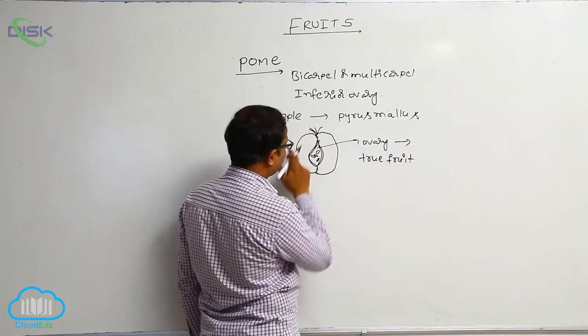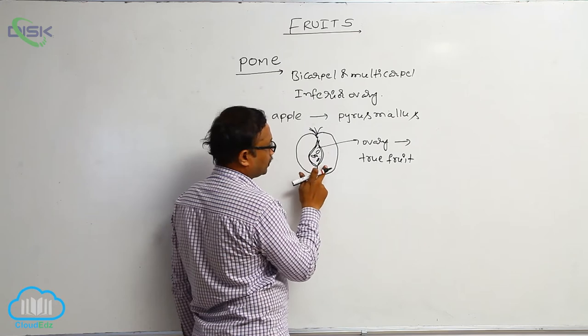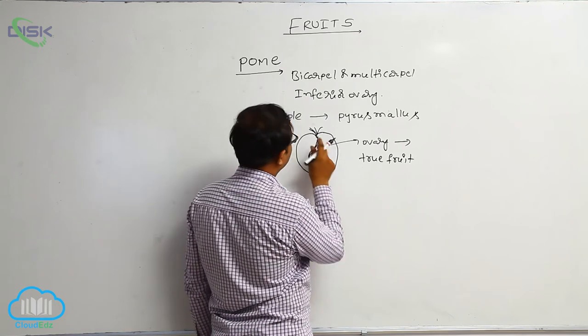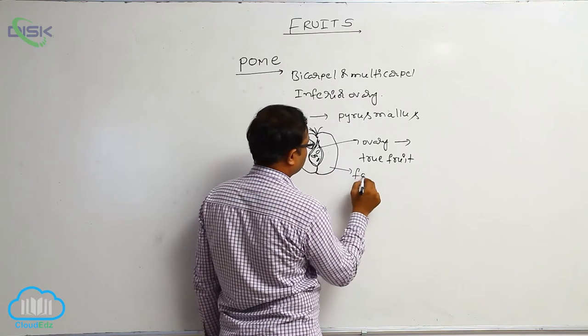It is enclosed with false fruit. This means the true fruit is always covered with false fruit in apple, Pyrus Malus. That is known as false fruit.